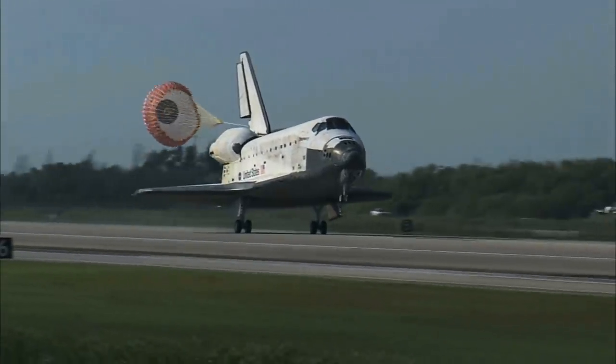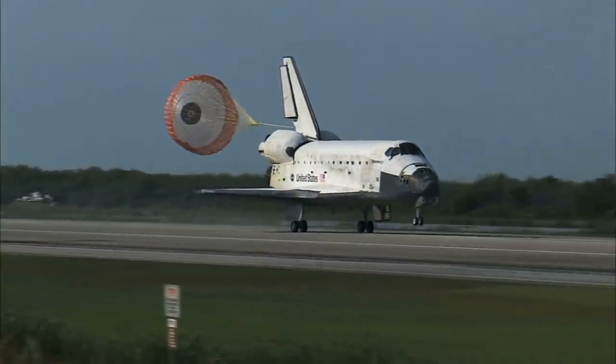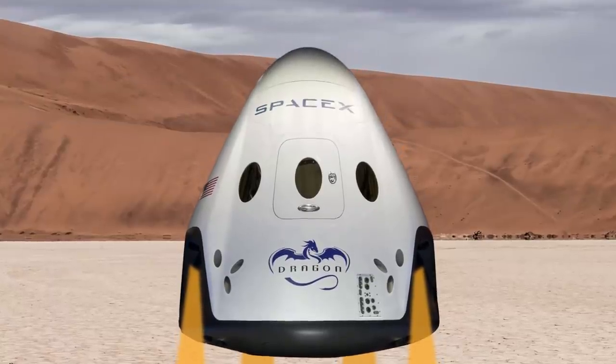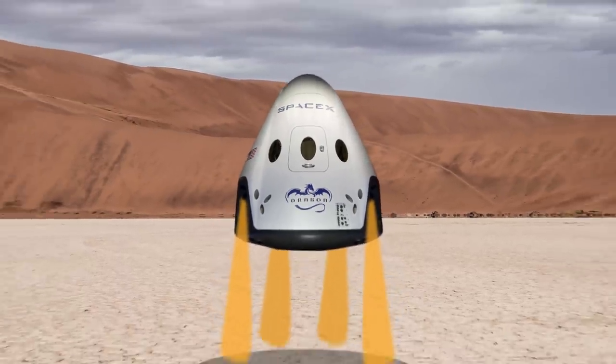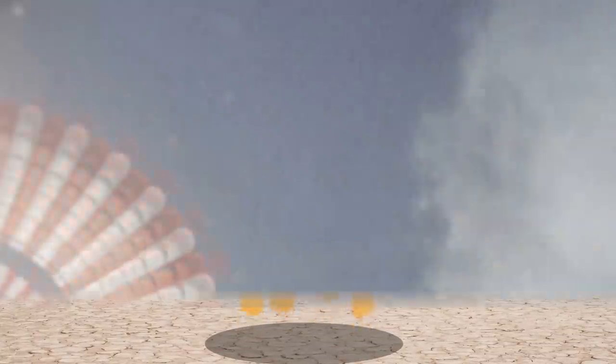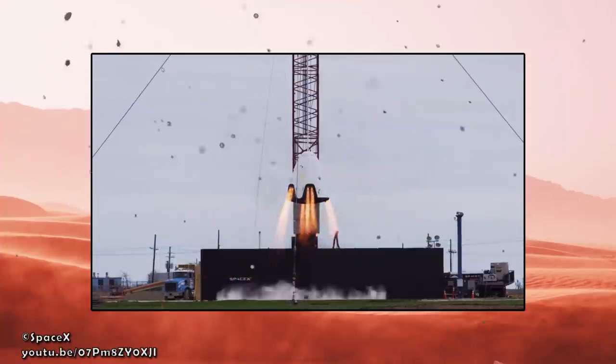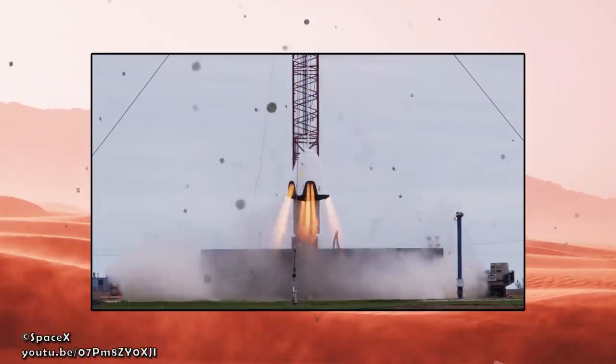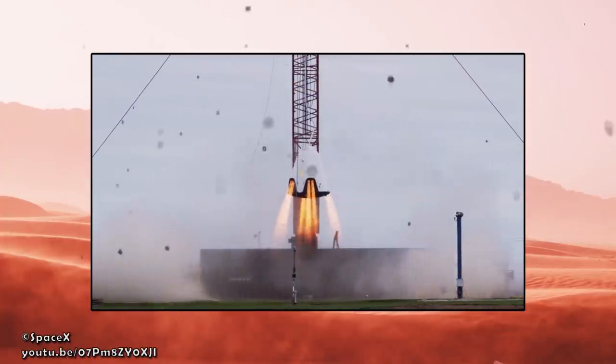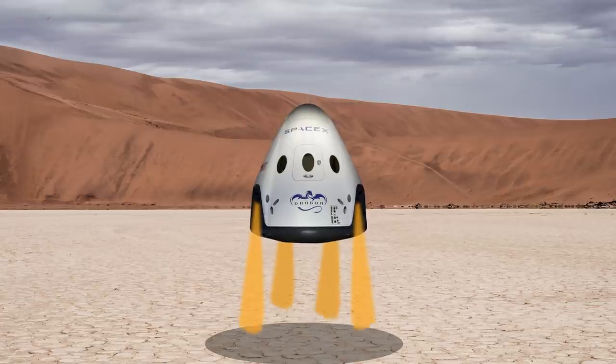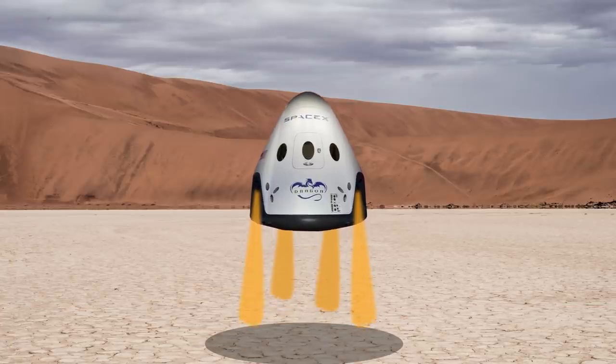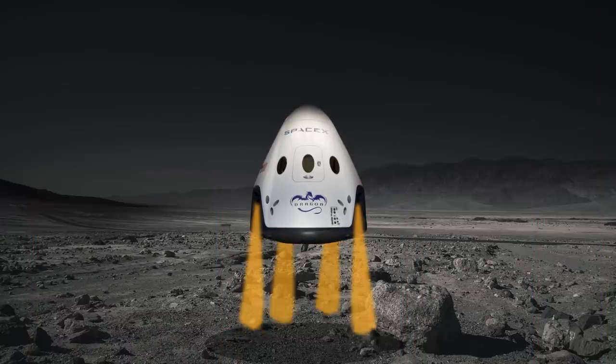Another special case is the Dragon 2 capsule. As mentioned briefly earlier, it's designed to use an active, powered landing system via boosters, completely ditching the use of parachutes during its lower atmospheric descent. This was initially due to the fact that it's designed to land not just on Earth, but on destinations where parachutes may be ineffective, such as the thin and non-existent atmospheres of Mars and our Moon, respectively.